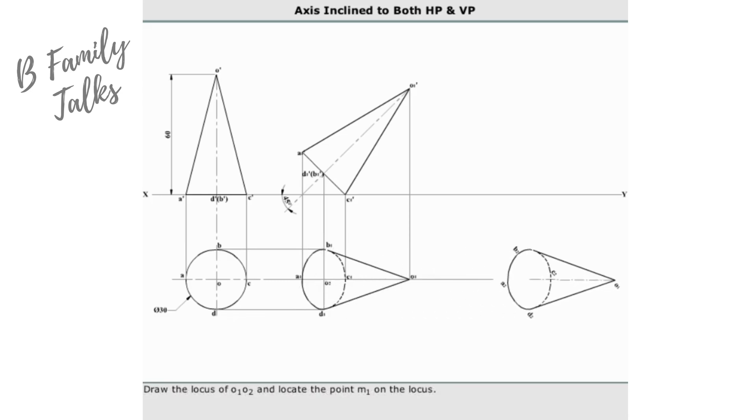Draw a locus of O1 O2 and locate the point M1 on the locus. Draw a line inclined at 30 degrees to the XY line through M1. With M1 as center and the height of cone 60 millimeters as radius, draw an arc to cut the locus.